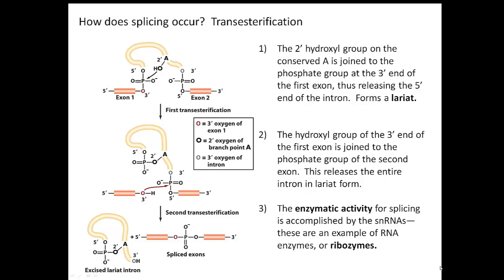The molecular changes that occur are two transesterification reactions. The first involves the formation of the lariat — the A binding with the beginning of the intron. Since that A is part of an RNA sequence, its 5' and 3' positions are already taken up in the RNA strand, so it is the 2' OH that actually attacks the phosphate group at the beginning of the intron. The second transesterification reaction is the joining together of the two exons — the OH attacks the phosphate at the 5' end of the next exon.